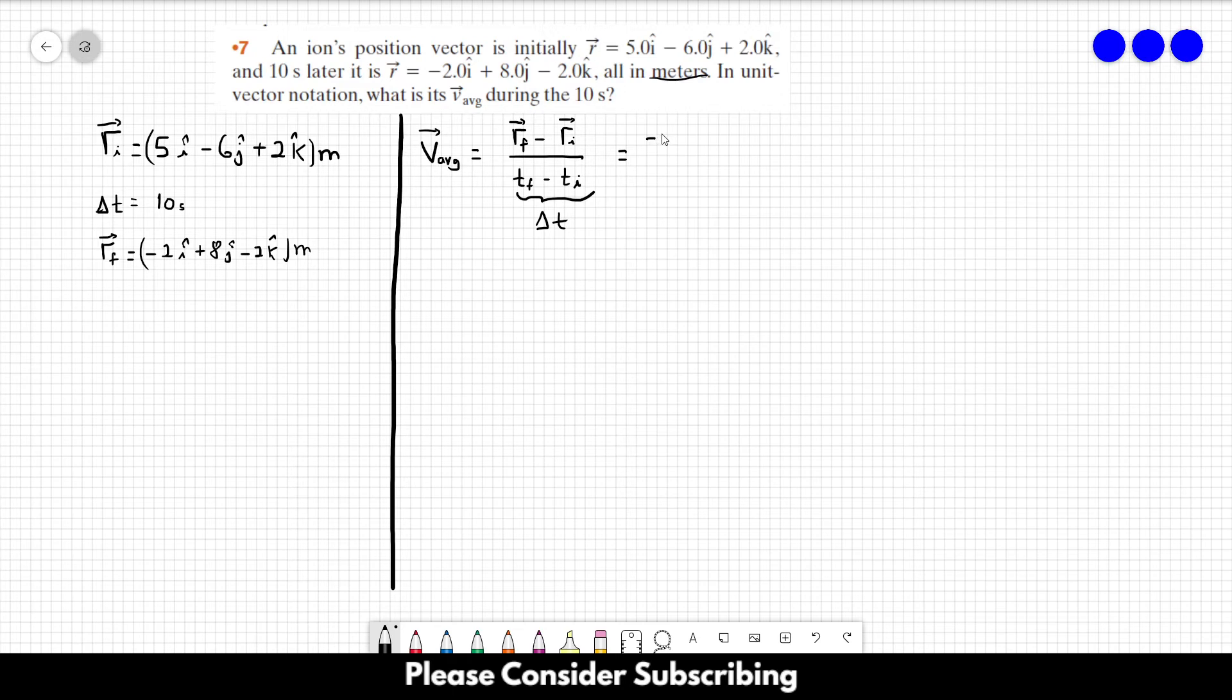So this is minus 2 in the I direction, plus 8 in the J direction, minus 2 in the K direction, minus 5 in the I direction, plus 6 in the J direction, plus 2 in the K direction, and this over 10.